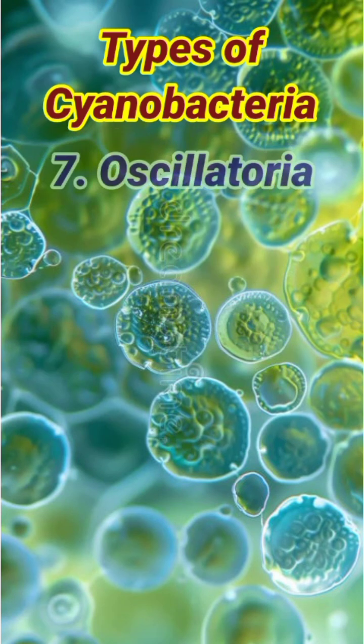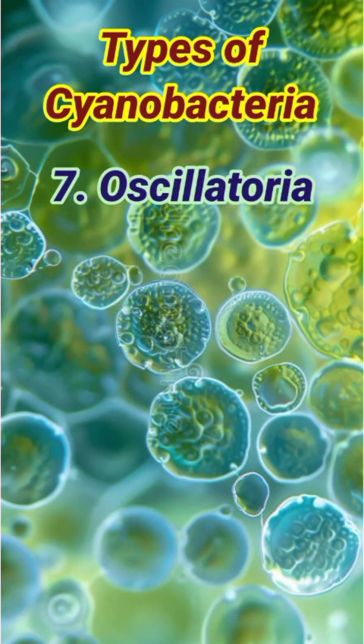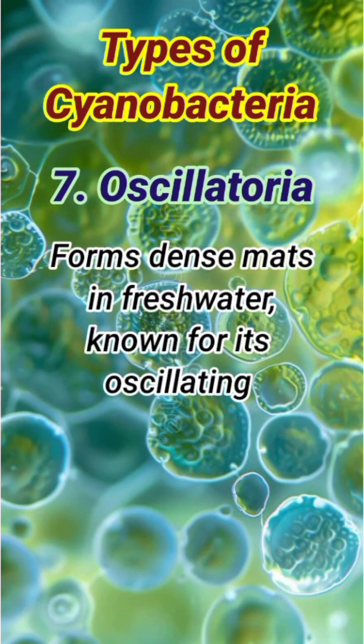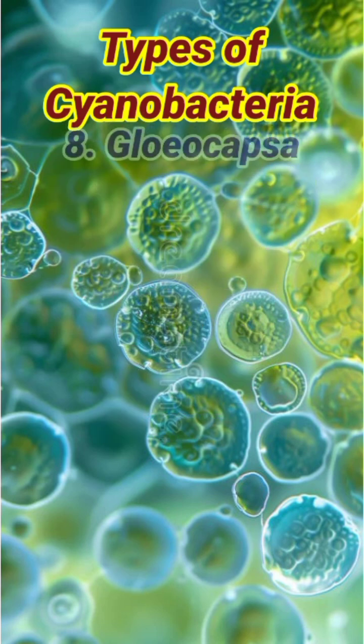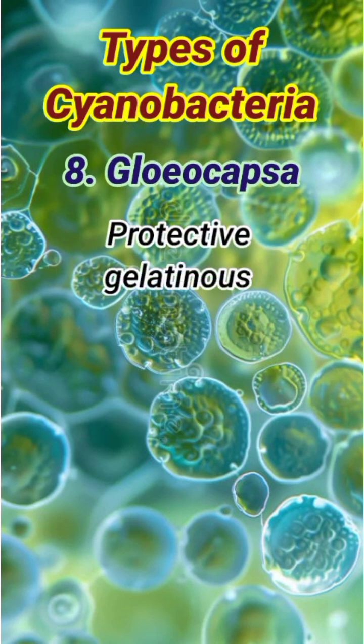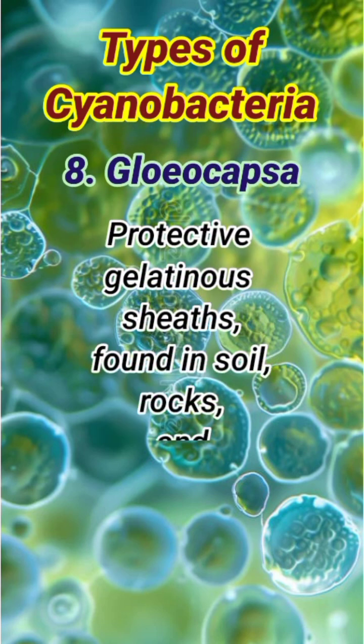Number 7: Oscillatoria. Forms dense mats in freshwater, known for its oscillating movement. Number 8: Gloeocapsa. Has protective gelatinous sheaths and is found in soil.